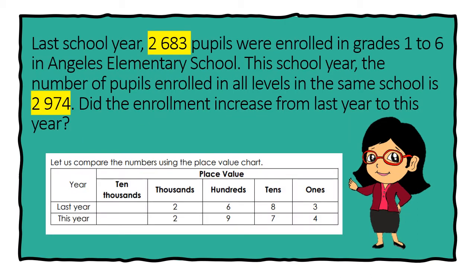I have here a story problem. I'll be reading it for you. Last school year, 2,683 pupils were enrolled in grades 1 to 6 in Angeles Elementary School. This school year, the number of pupils enrolled in all levels in the same school is 2,974. Did the enrollment increase from last year to this year? Let us compare the numbers using the place value chart.